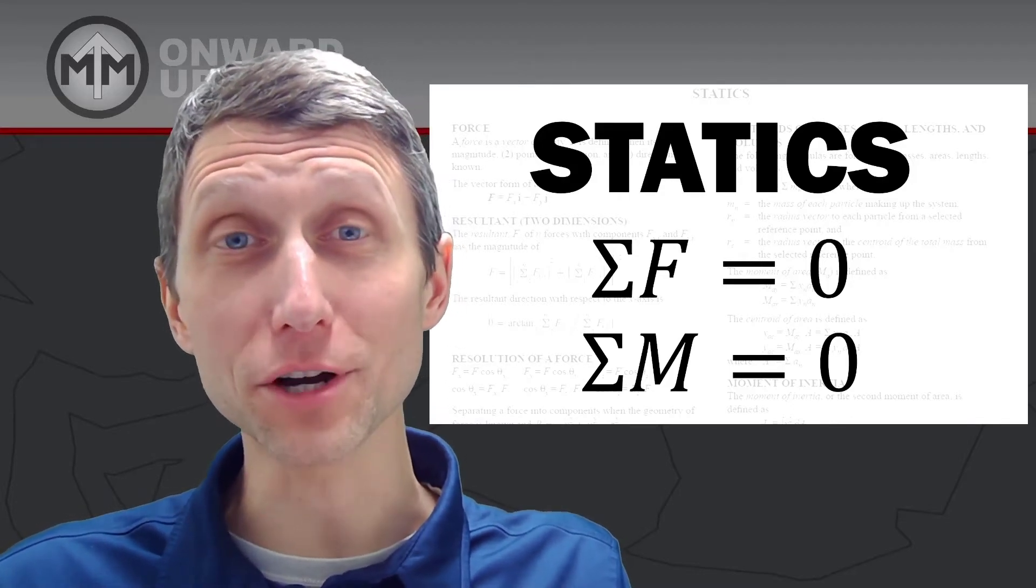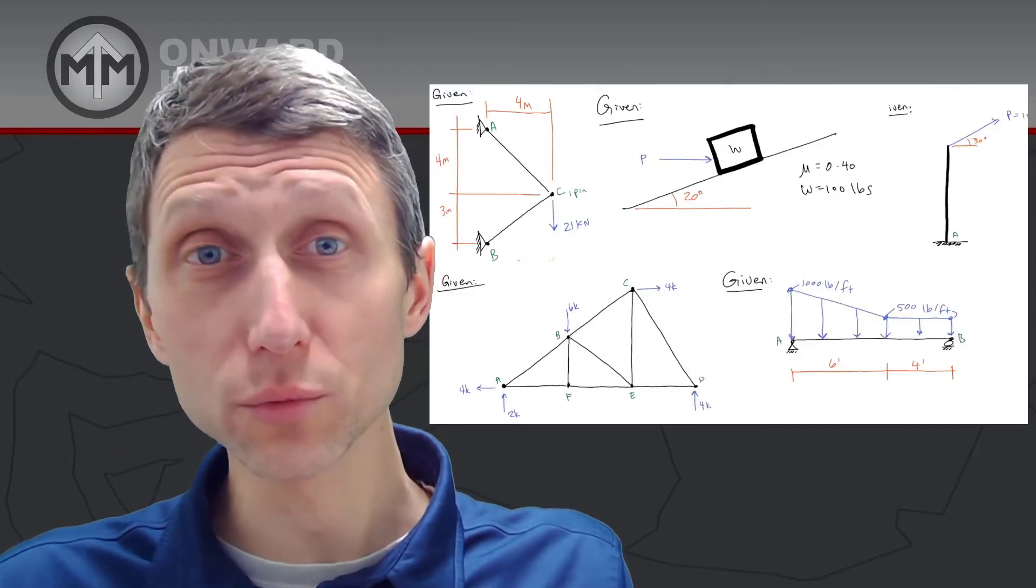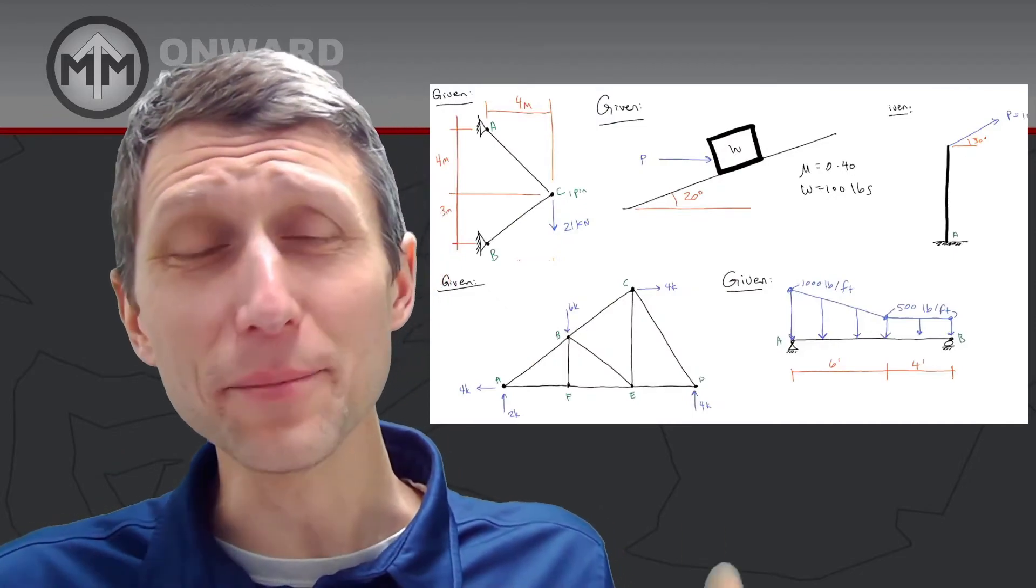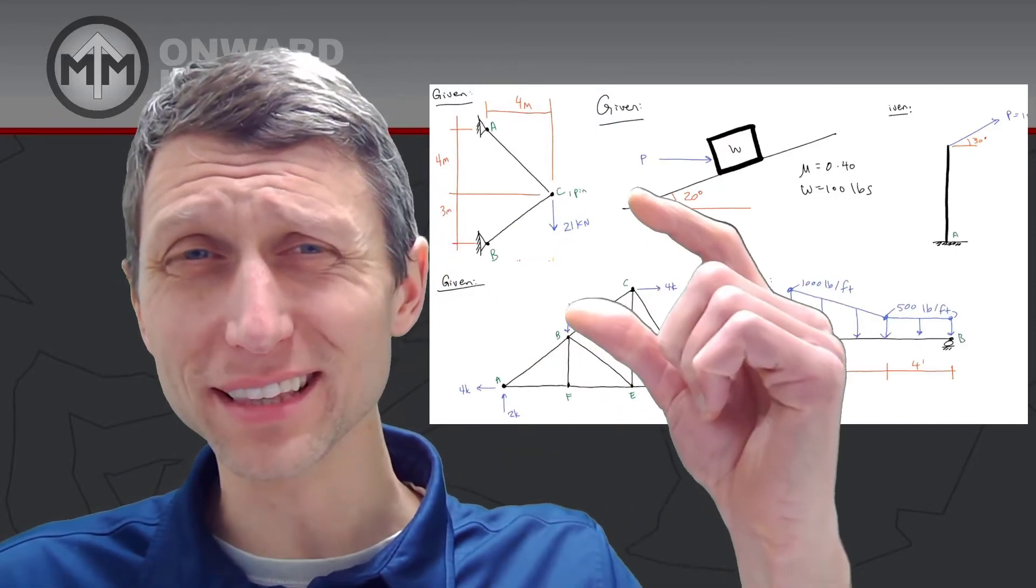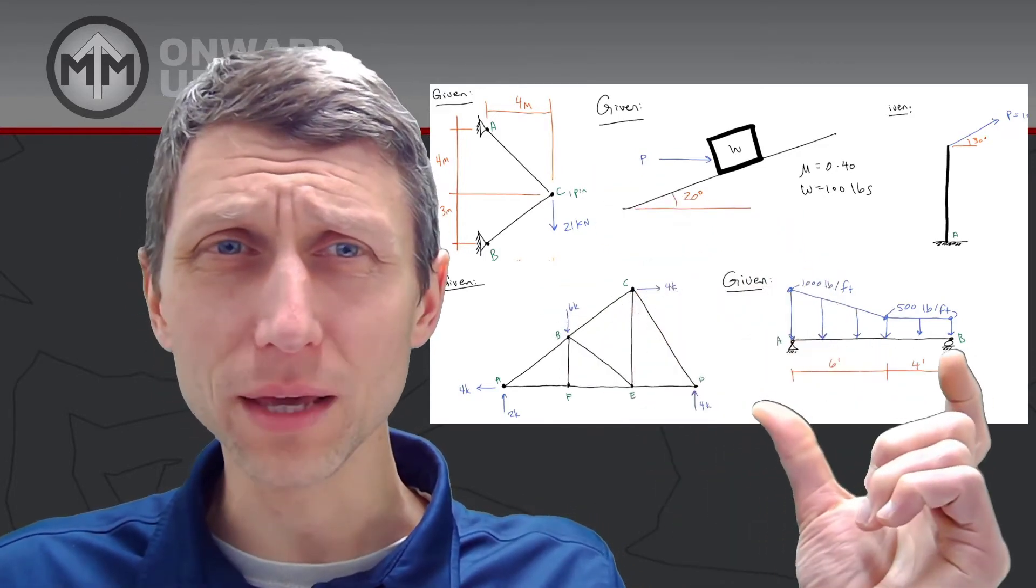And ultimately that's going to help keep your structure standing and your donkey not in the air. And in reality, what does this look like? It looks like trusses, it looks like these bracket problems like a two bar truss, maybe friction or beams.